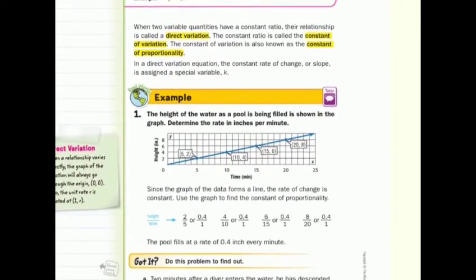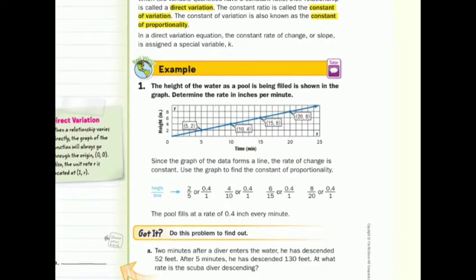In our first guided example, the height of the water as a pool is being filled is shown in the graph. Determine the rate in inches per minute. Since the graph of the data forms a line, the rate of change is constant. Use the graph to find the constant of proportionality. We'll look at 2 over 5, which is 0.4 over 1, or 4 tenths over 1. 4 over 10 is 4 tenths over 1, 6 over 15 is 4 tenths over 1, 8 over 20 is 4 tenths over 1. Notice all of these were y over x. So the pool fills at a rate of 4 tenths an inch every minute.